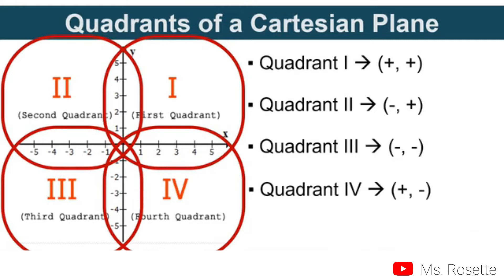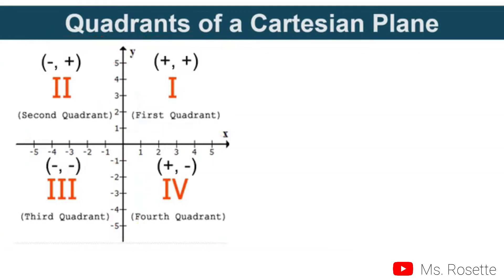Now let's have an example in identifying the quadrant. Let's recall: quadrant 1 must be two positive coordinates. Quadrant 2 must be negative first, then positive. Quadrant 3, both negative. Quadrant 4, positive, negative. Please take note of that. Now let's have an example.